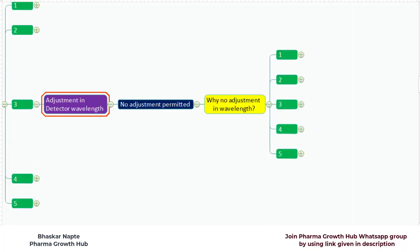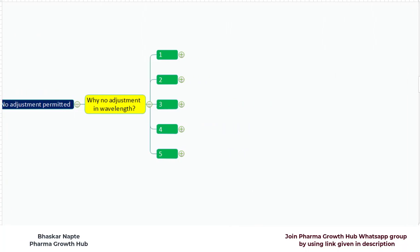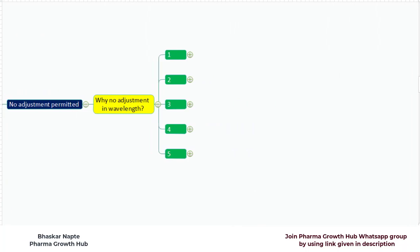Let us understand with the help of these 5 important points why USP 621 General Chapter does not allow any variation into the detection wavelength. The first point is: interested compound may go missing because of change in the detection wavelength.